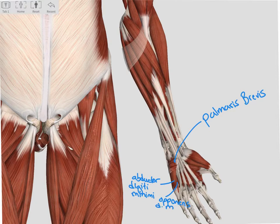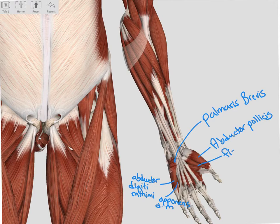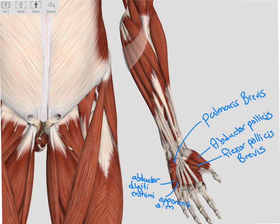On the thumb side, we have our abductor pollicis. Then we have our flexor pollicis brevis. And deep to that muscle, we would be able to see our flexor pollicis longus. And then these two muscles create our adductor pollicis.